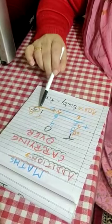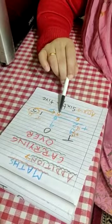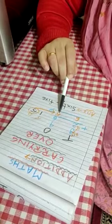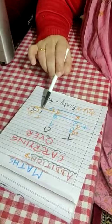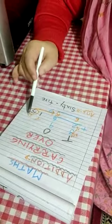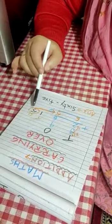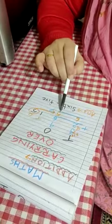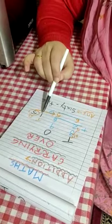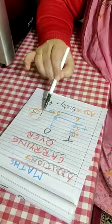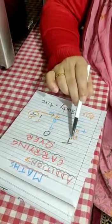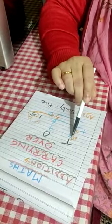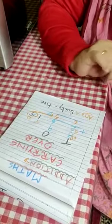Now we cannot write a two digit number here — we can write only one digit. So what will we do? The number in the ones place, that is 5, we will put it down here. The number in the tens place, 1, we will carry it over to the tens place here.